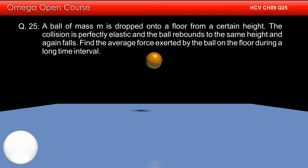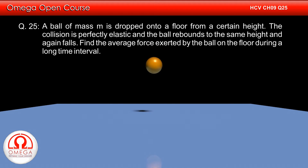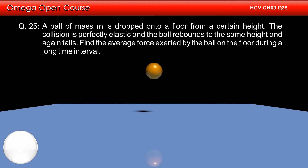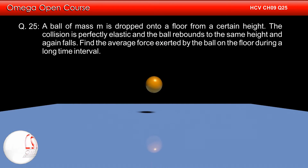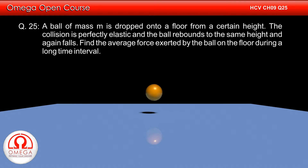A ball of mass M is dropped onto a floor from a certain height. The collision is perfectly elastic and the ball rebounds to the same height and again falls. Find the average force exerted by the ball on the floor during a long time interval.